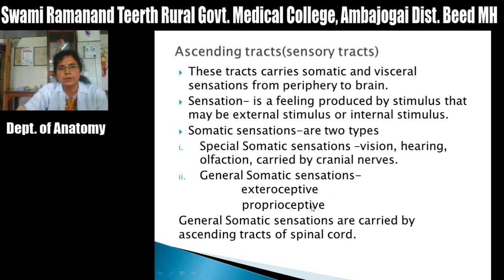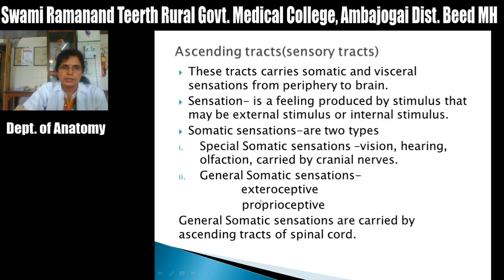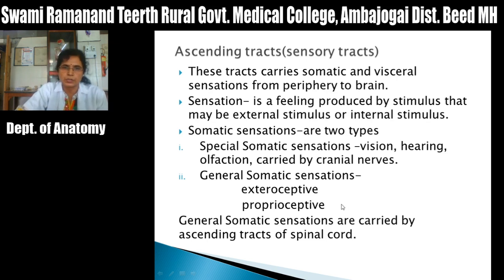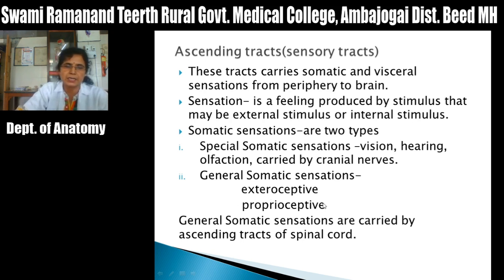Proprioceptive sensation is generated by the movements of the body, actively formed by body movements that stimulate peripheral receptors present in muscles, tendons, joints, ligaments, and bones. These sensations include position of the body in space, position of joints, contraction of muscle, and stretching of muscle. The receptors for proprioception are mainly the muscle spindle, Pacinian corpuscles, and Golgi tendon organ.